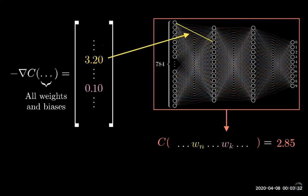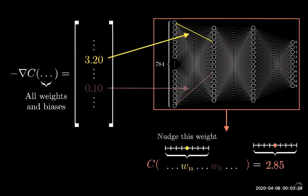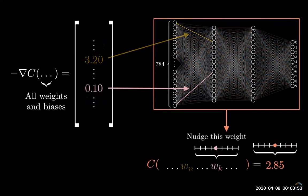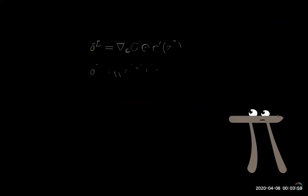For example, if you compute the negative gradient and the component associated with the weight on this edge comes out to be 3.2 while this edge comes out as 0.1, the way you would interpret that is that the cost function is 32 times more sensitive to changes in that first weight.